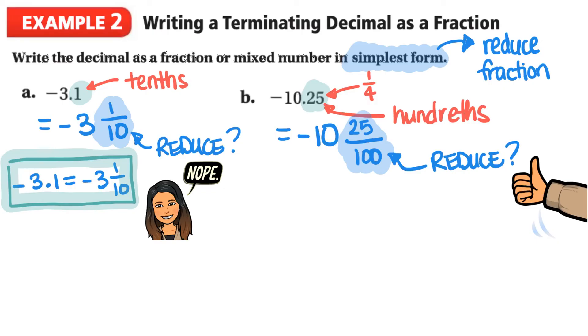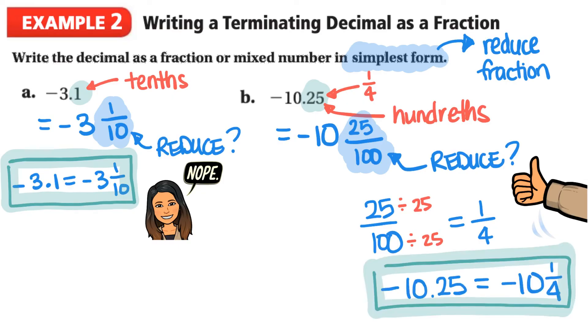Now, we want to make sure our fraction is simplified as possible and 25 over 100 can be simplified. So we notice that 25 and 100, they definitely can be reduced because, one, they're both divisible by 5. So we know that it can be made smaller. So the greatest common factor between 25 and 100 is 25. So we can divide both by 25. So 25 divided by 25 makes 1 and 100 divided by 25 makes 4. So now we get the fraction negative 10 and 1 fourth.